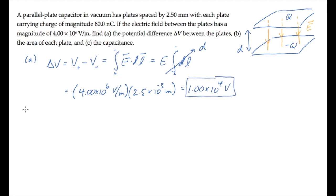I'm going to solve part C before part B because we know from the definition of capacitance that it equals the magnitude of charge on one of the plates divided by the potential difference delta V. We know both of those numbers, so we can just substitute them and calculate the capacitance to be 8 times 10 to the minus 12 farads or 8 picofarads.